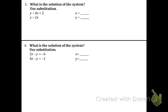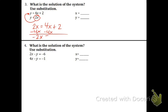Substitution. Y needs to be by itself. Take the 2x, plug it in for the y. So that is now looking like 2x equals 4x plus 2. Subtract the 4x to the other side — opposite operations. We get negative 2x equals positive 2. Divide both sides by negative 2, and we get x equals negative 1.